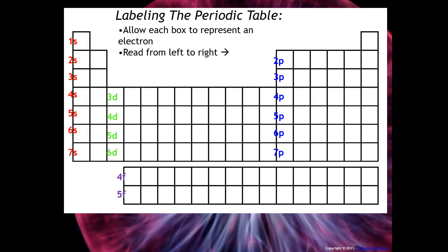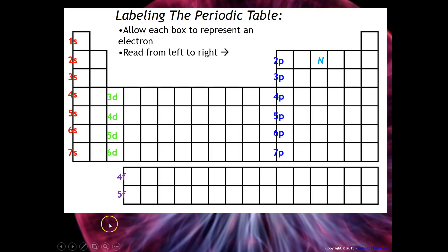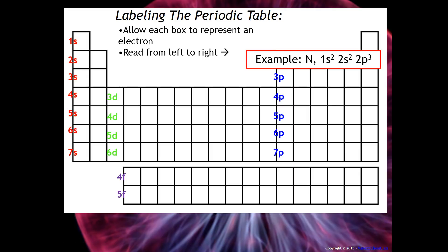Then you're going to read just like you read a sentence, from left to right. For example, to write the electron configuration for nitrogen, you would start by reading 1s2, then 2s2, then 2p3. You're letting each box represent a single electron and reading it like a sentence — that would be the configuration for nitrogen.